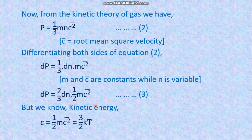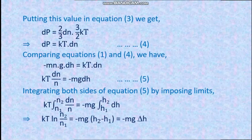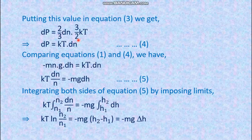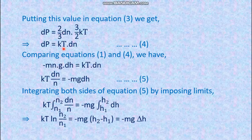We know that one-half m·c² is the kinetic energy of each gas molecule, which equals three-halves kT. So substituting, one-half m·c² equals three-halves kT, which simplifies the pressure equation.